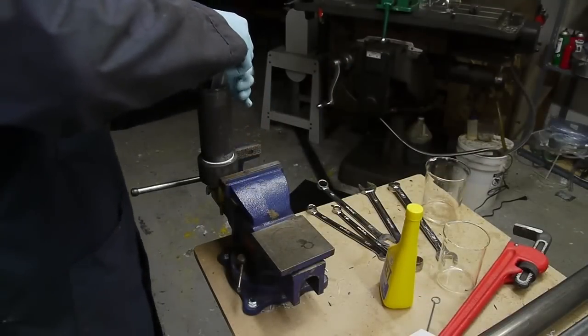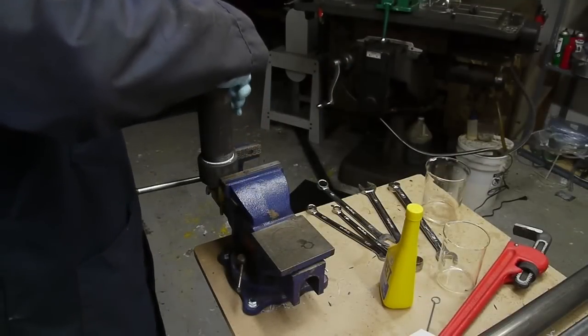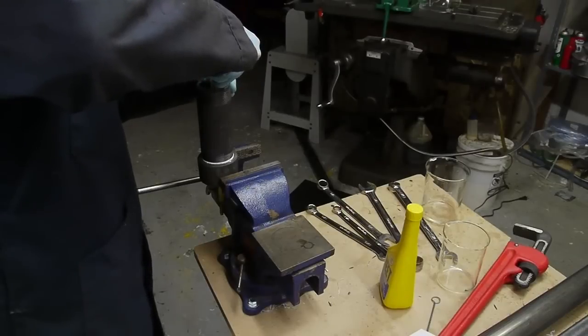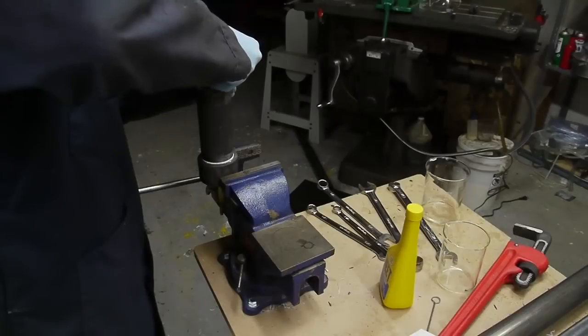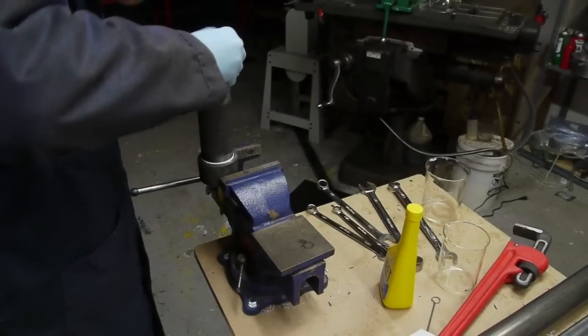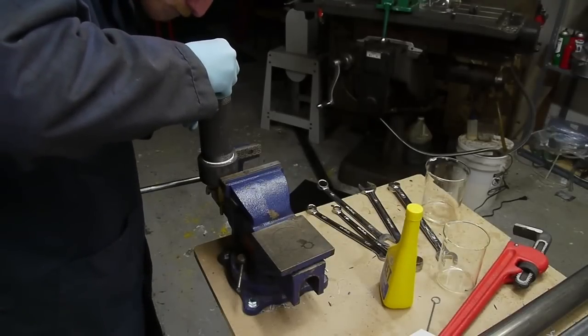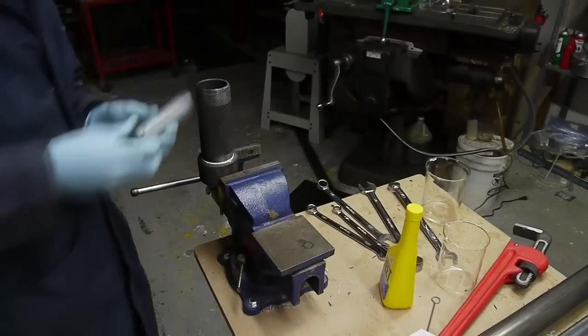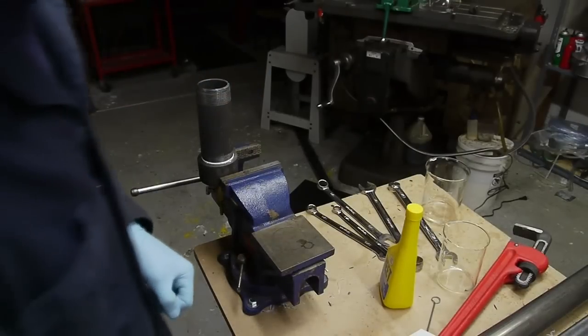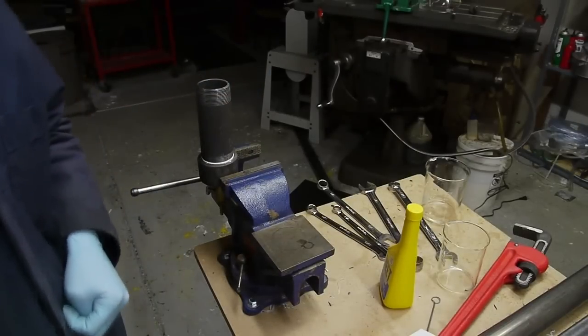But the lower density aerogel just cracked apart, kind of as usual, as I was ejecting them from the syringe. So I think in the future, if I try another batch, I will use like a metal container to form the aerogel and then put the whole metal container inside the drying chamber so they don't have to unmold it.